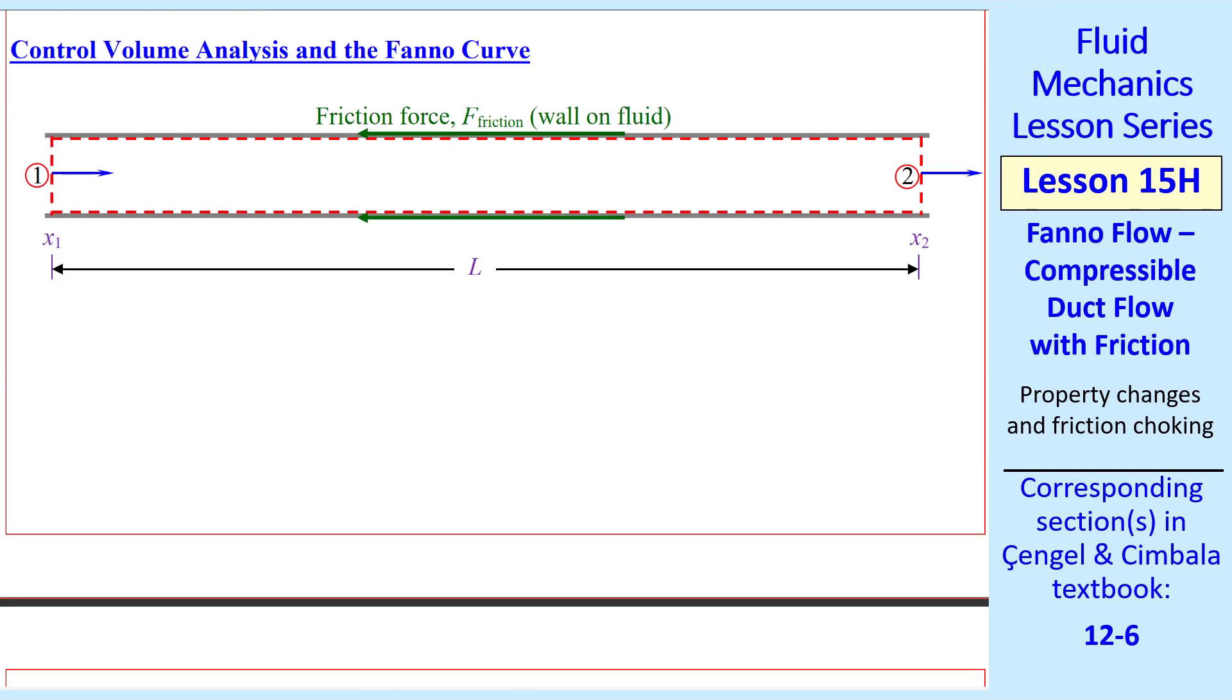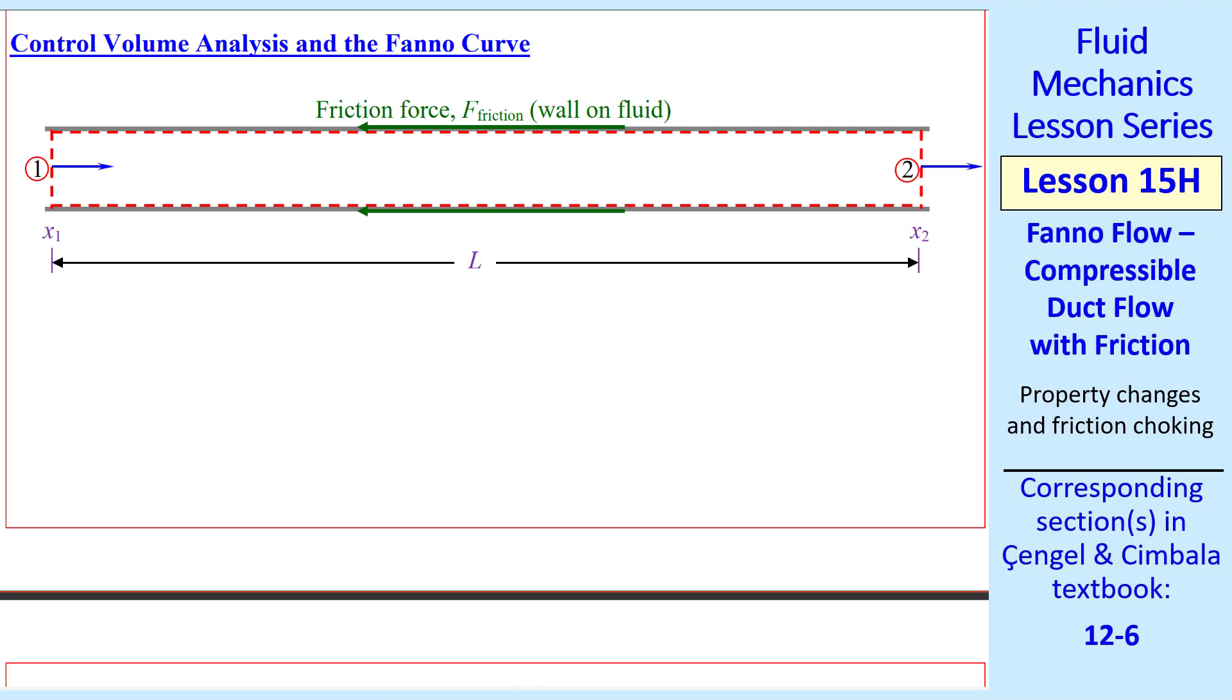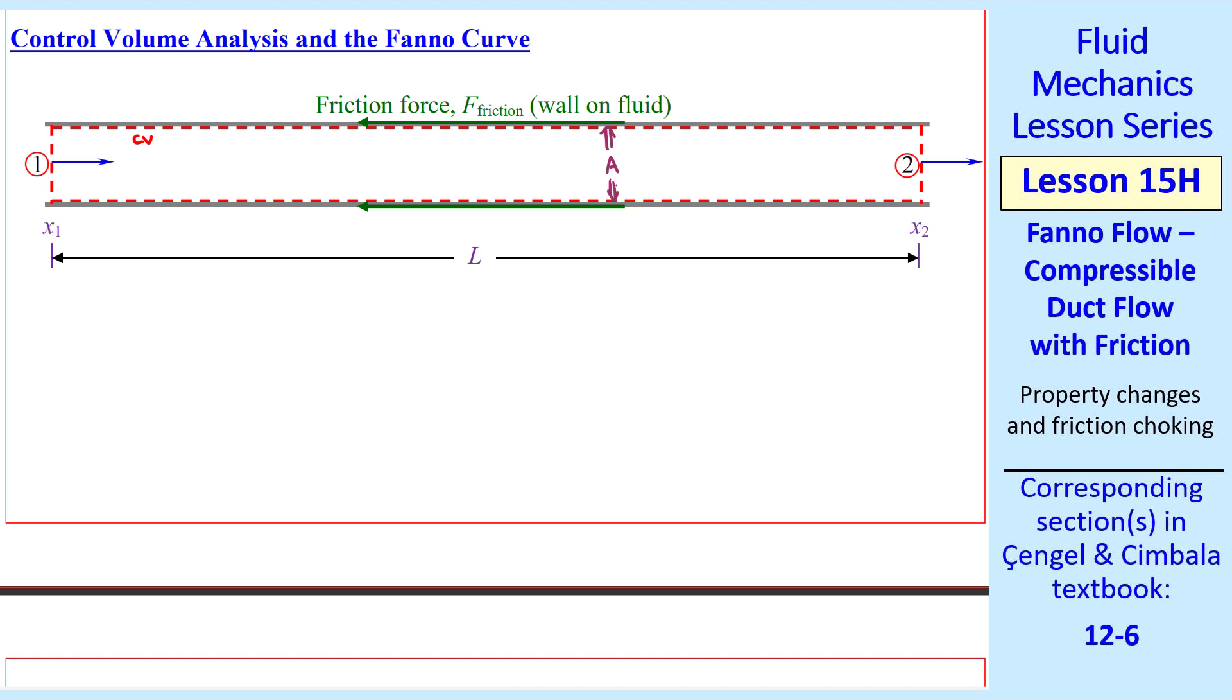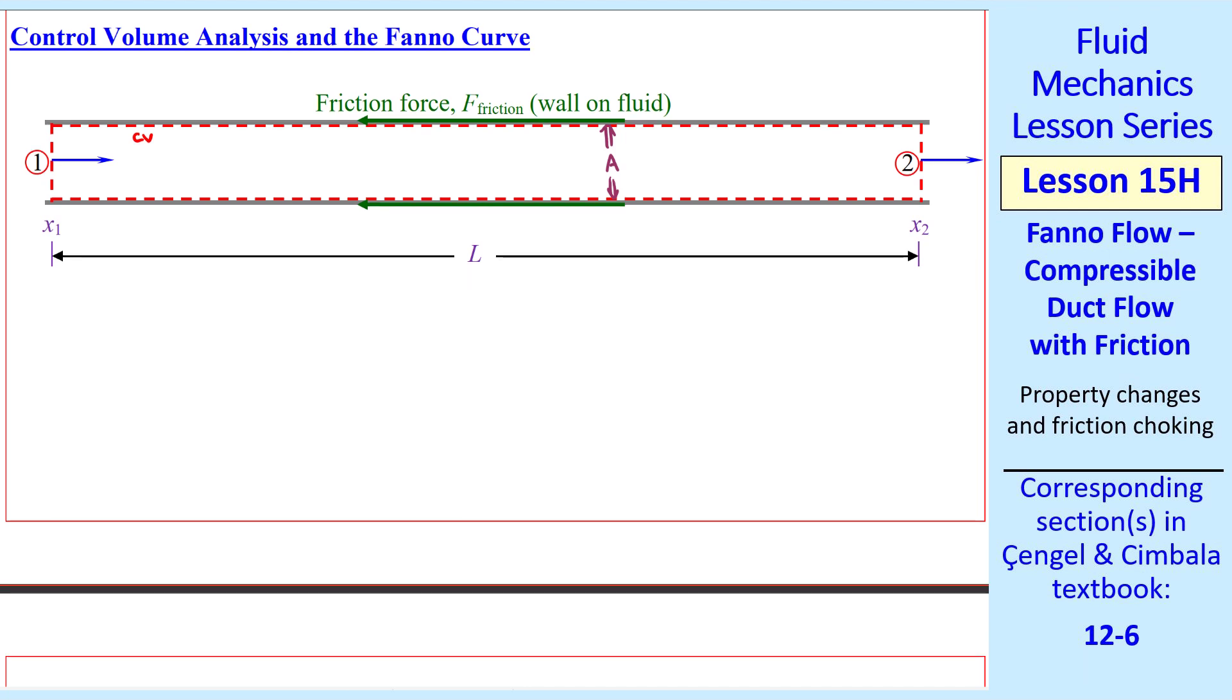As we did with Rayleigh flow, let's do a control volume analysis for Fanno flow. Here's a section of our duct. We'll start at location 1 or x1 and go downstream to x2, location 2. We pick a control volume that is just inside the wall of the duct and slices across 1 and 2. We'll let A be the cross-sectional area of the duct.